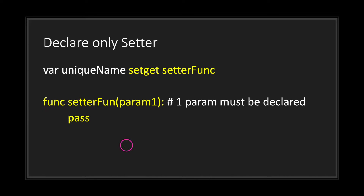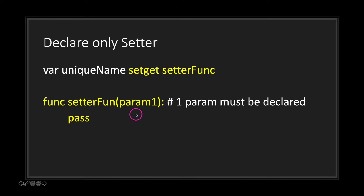You can set either a setter function or a getter function to your variable. To set only a setter function, all you have to do is use the setget keyword followed by the setter function name. Again, keep in mind that when you declare your function you must have a single argument.